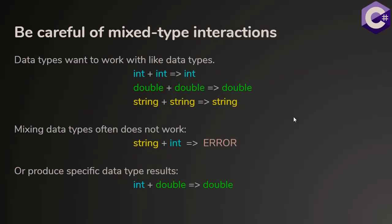We have to be careful when we are working with different data types. Data types want to work with themselves. For example, integers like to work with other integers and will produce an integer. Doubles and doubles produce doubles, strings and strings produce strings. When you mix data types, it often will not work. So if I have a value stored in a string and then try to add it to an integer, I can get an error.